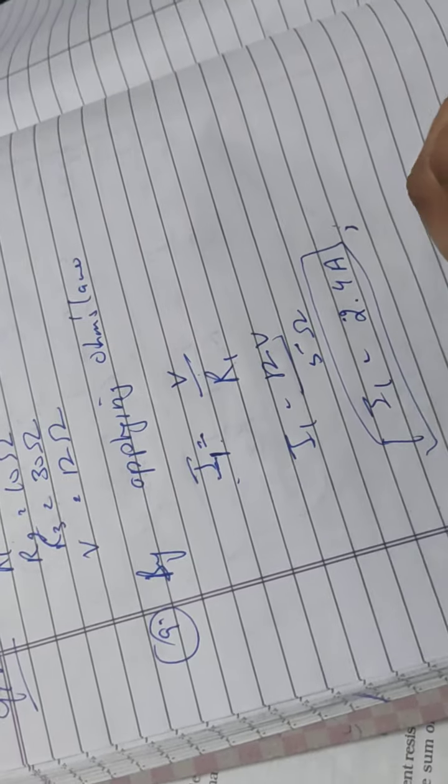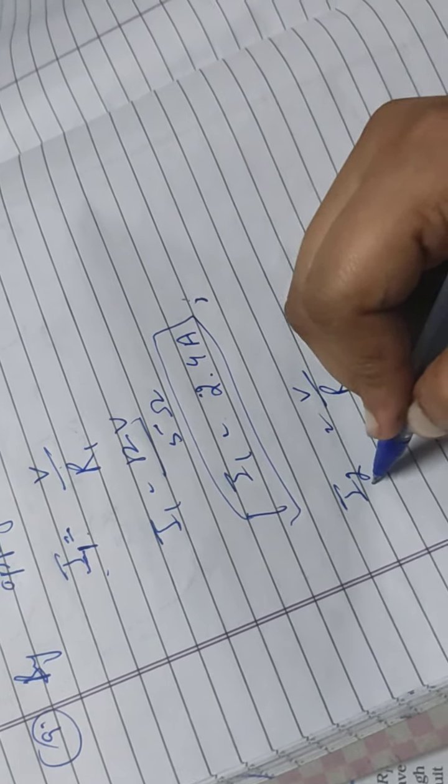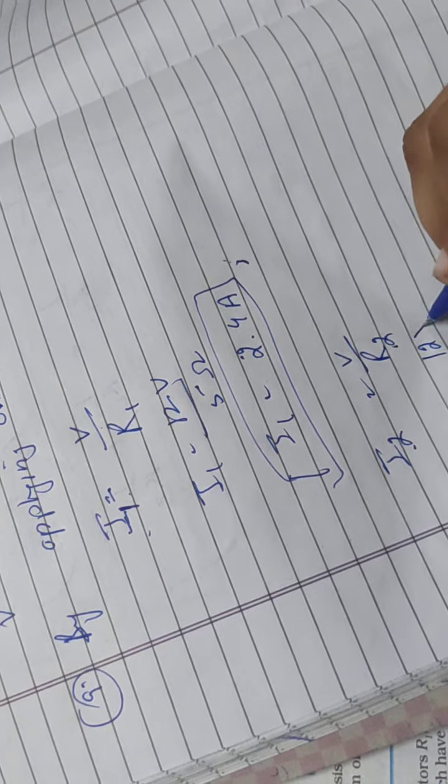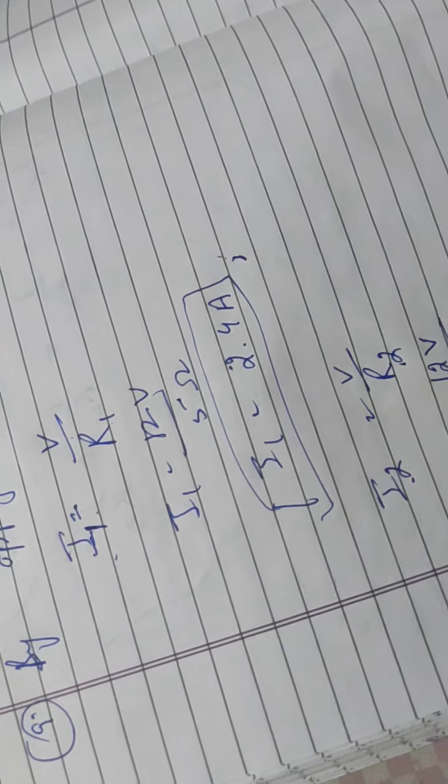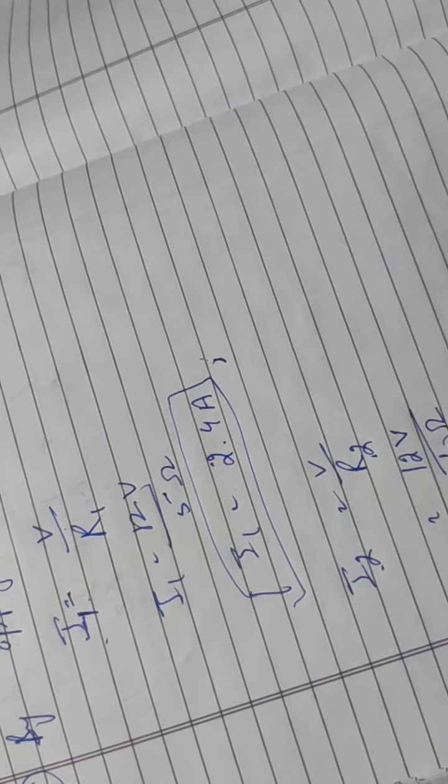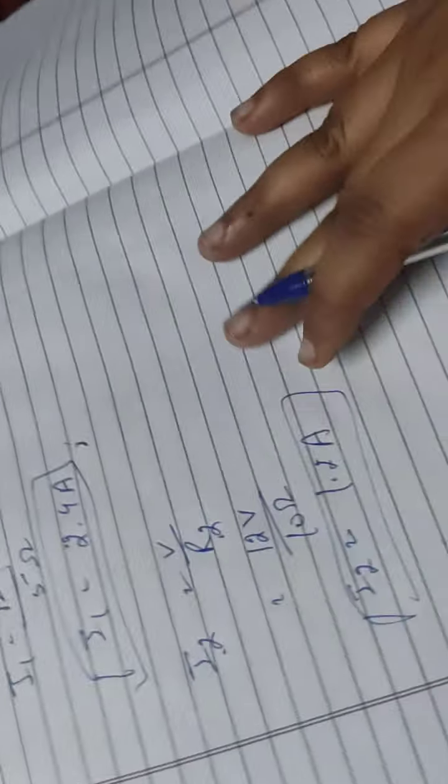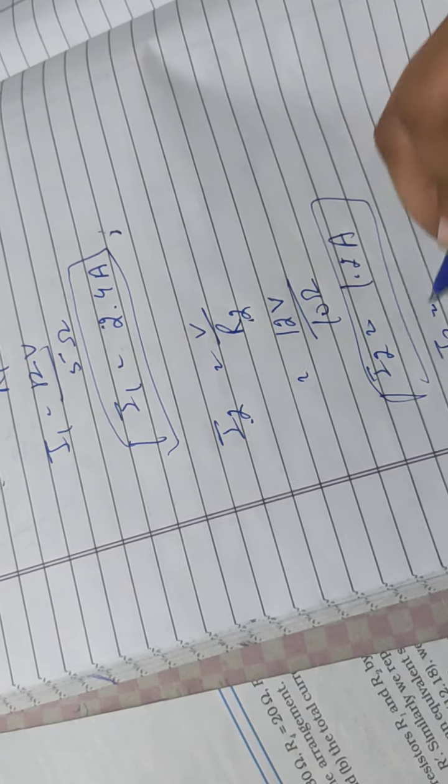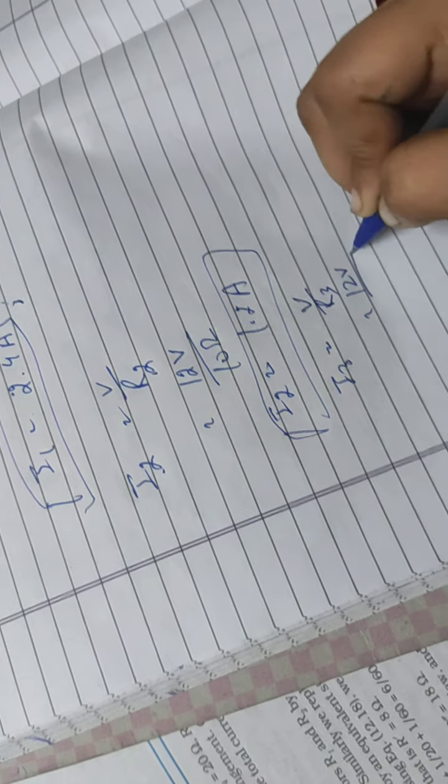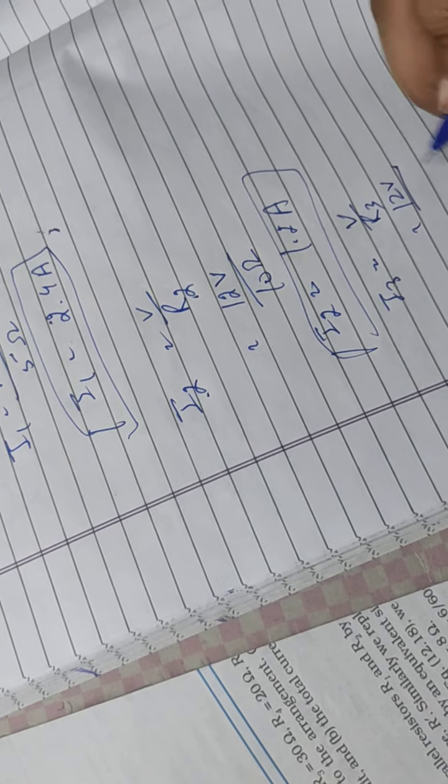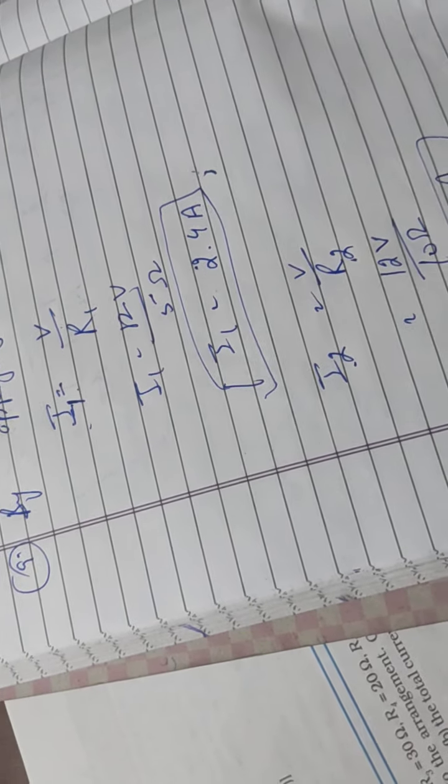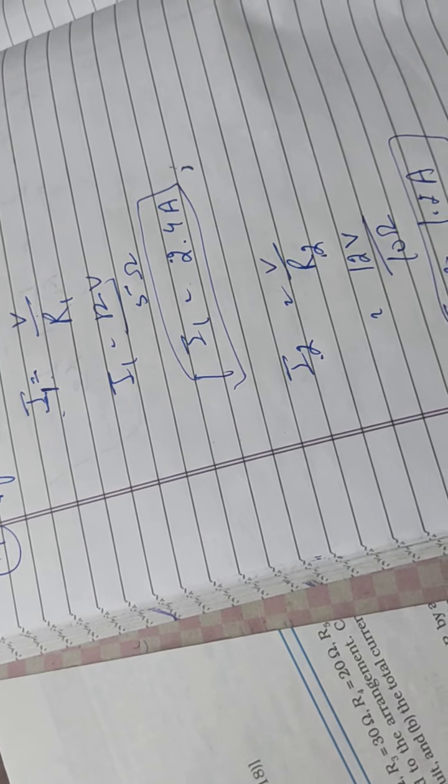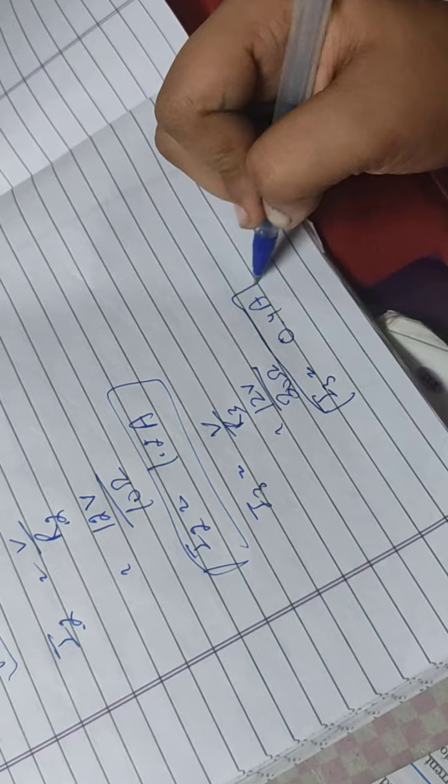Similarly I2 is V by R2. I2 is 12 divided by 10, that is 10 ohm. Then I2 answer is 1.2 ampere. Similarly I3.